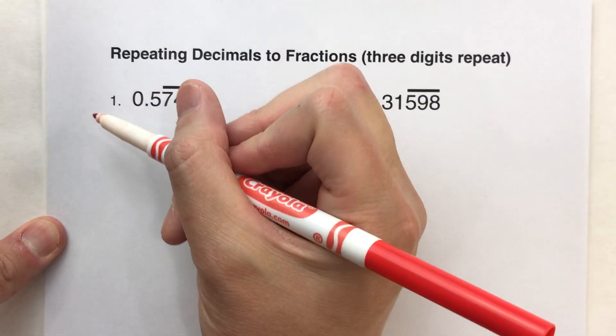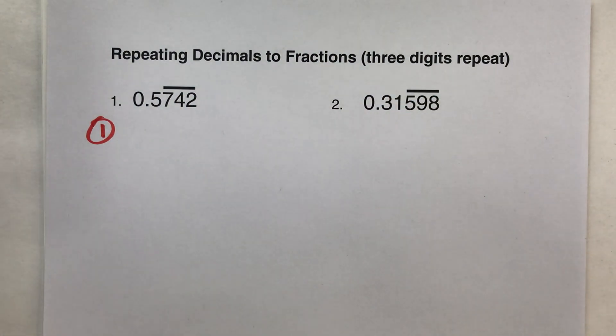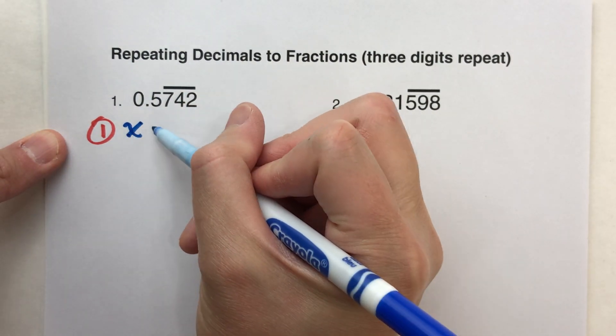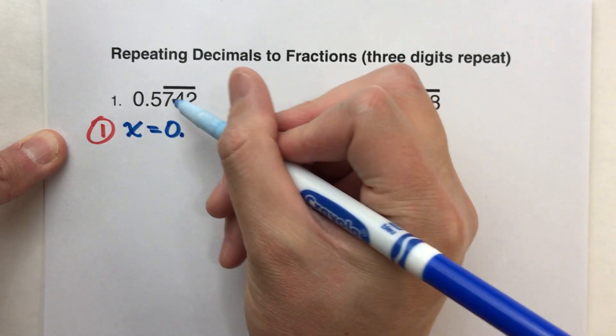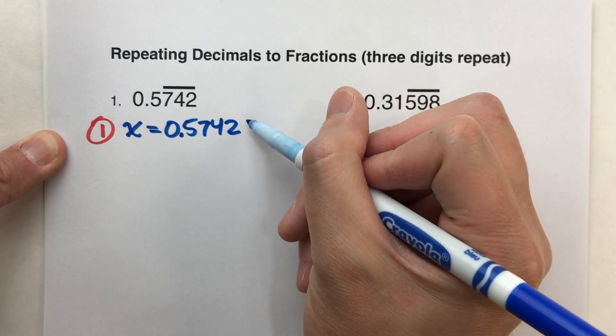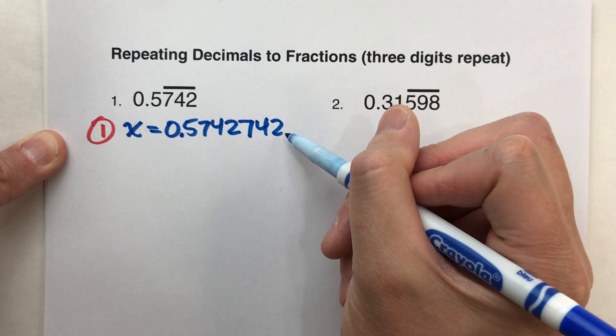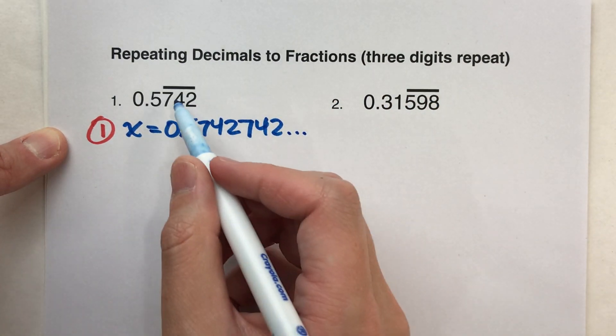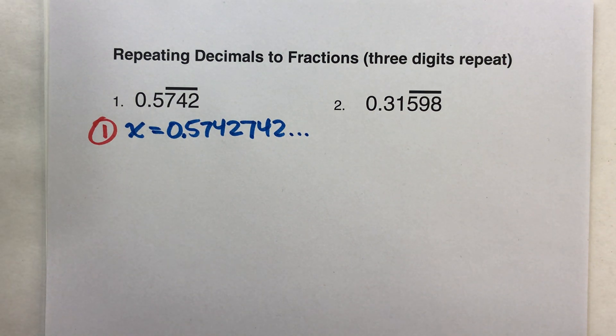So let's go through the steps. There's four steps to this. Step one, we're going to write an equation, setting x equal to the number we have. So in this case, x equals 0.5742, and we're going to repeat 742, 742, 742, and I like to write it out. I mean, we could keep the repeating bar, but I like to write it out so I can see the number.